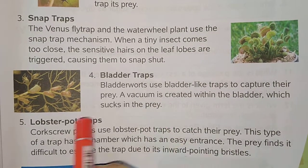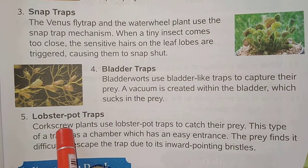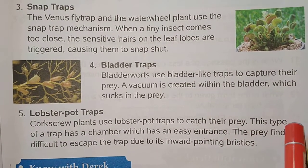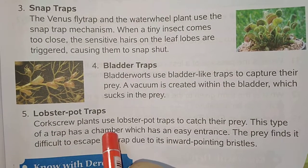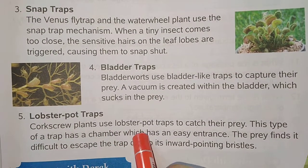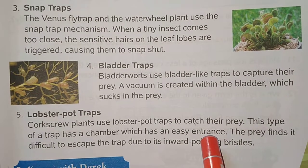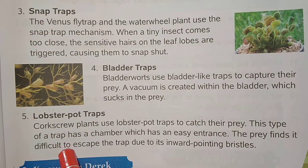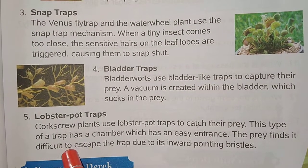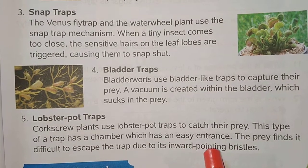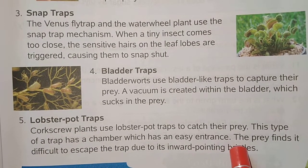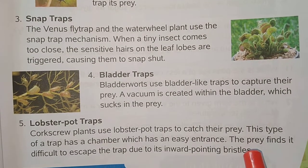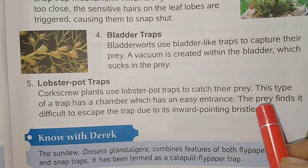Next is the lobster pot trap. The corkscrew plant uses the lobster pot trap to catch its prey. This type of trap has a chamber with an easy entrance, but the prey finds it difficult to escape due to inward-pointing bristles. The bristles cause the prey to become stuck and it cannot escape back out.